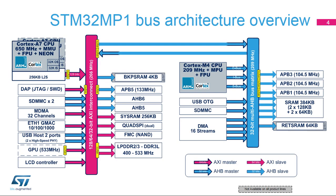The STM32 MP1 bus architecture is split into two interconnect matrices — ARM Cortex-A7 and ARM Cortex-M4 — operating in different frequency domains which can be set in low-power modes independently. One high-speed ARM CoreLink NIC-400 AXI-based network interconnect performs interconnection between masters and slaves on the Cortex-A7 (MPU) side, operating at 266 MHz CK-ACLK and allowing internal bandwidth up to 2 gigabytes per second. This matrix is optimized for low-latency and very high-bandwidth transfers to and from external DDR as well as internal SRAMs.